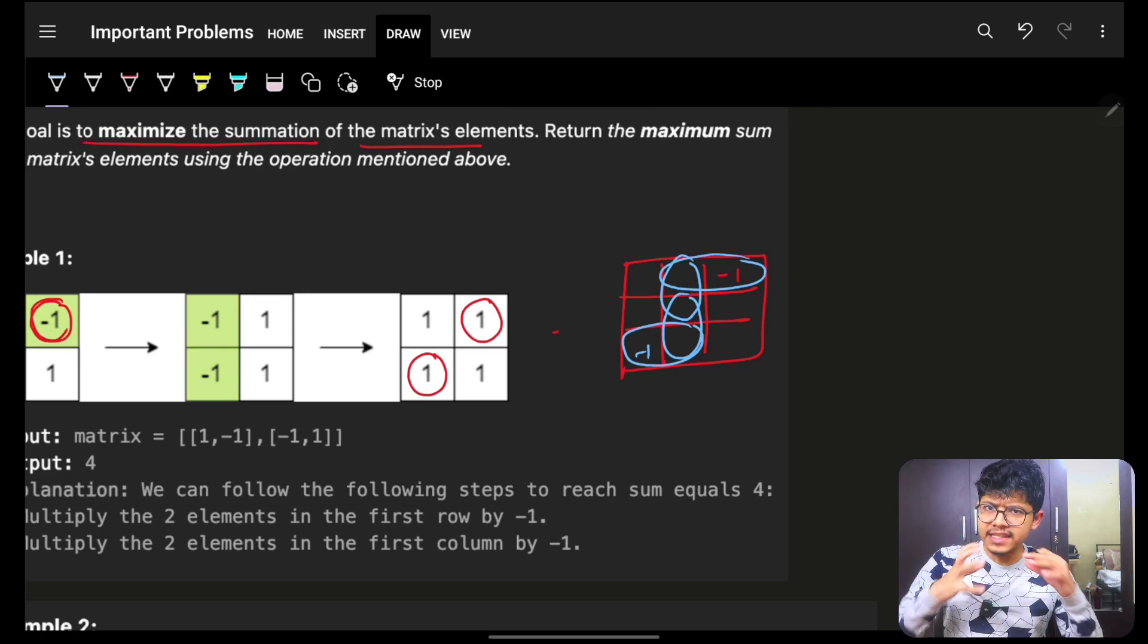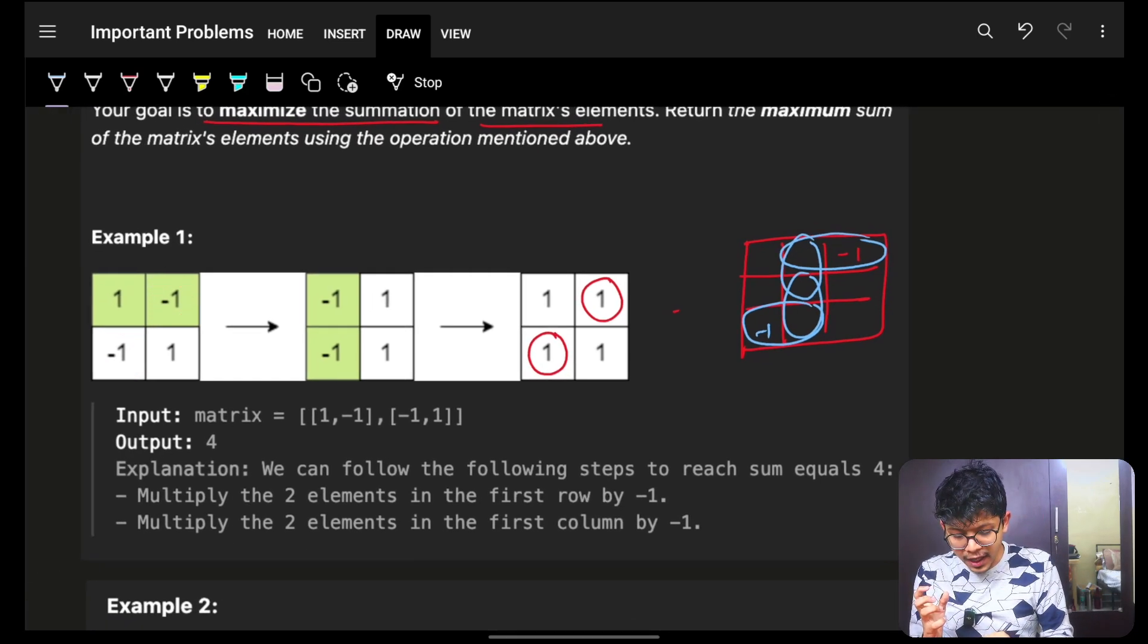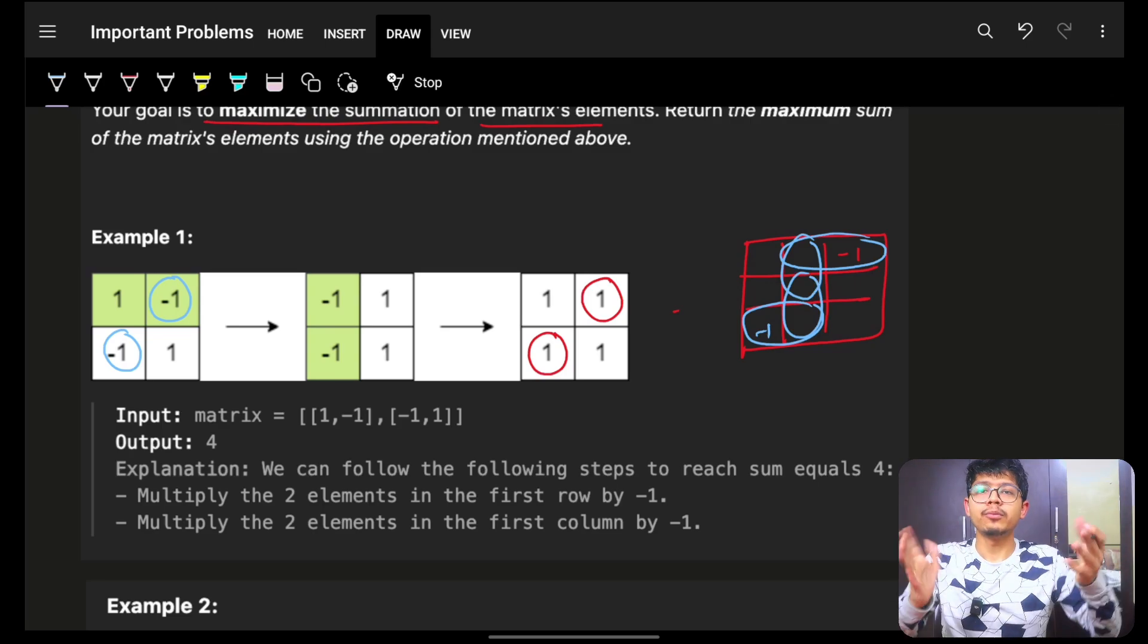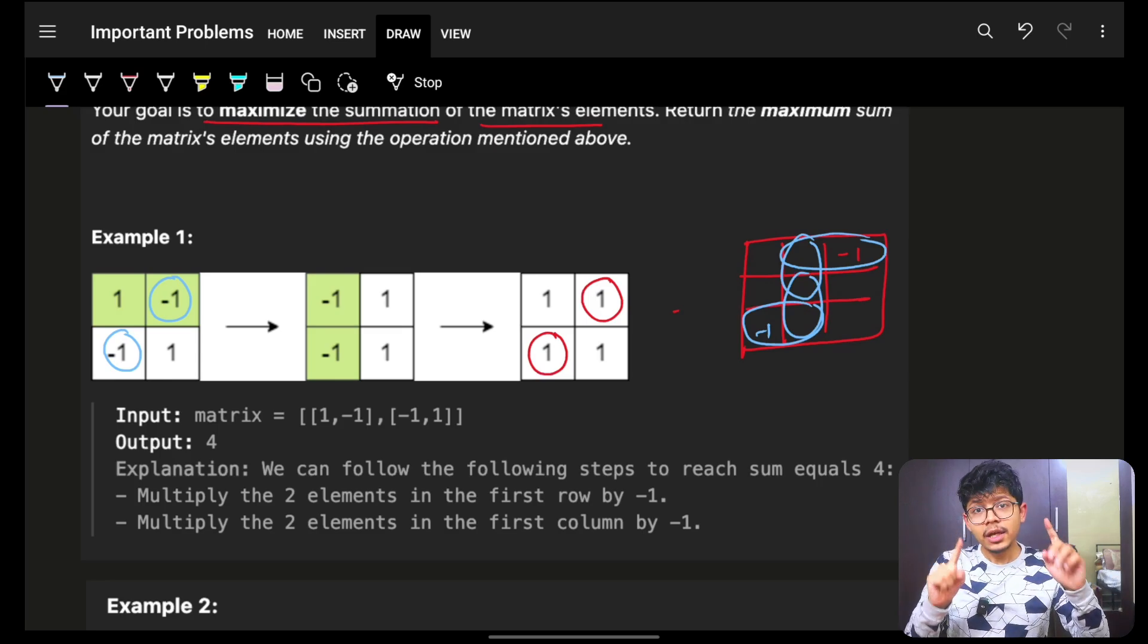So, I simply can easily see that if I have two negative numbers anywhere in the entire matrix, I can club them up and I can say, okay, I will make both of them positive. I will make both of them positive.